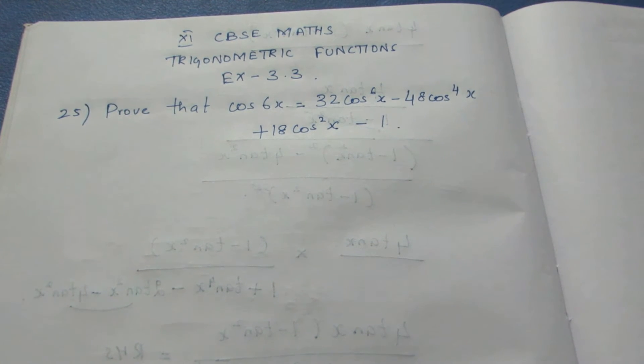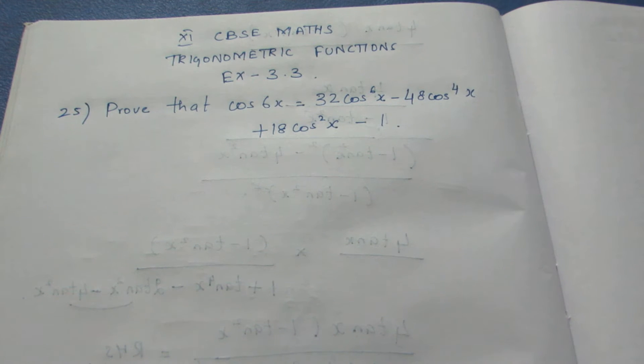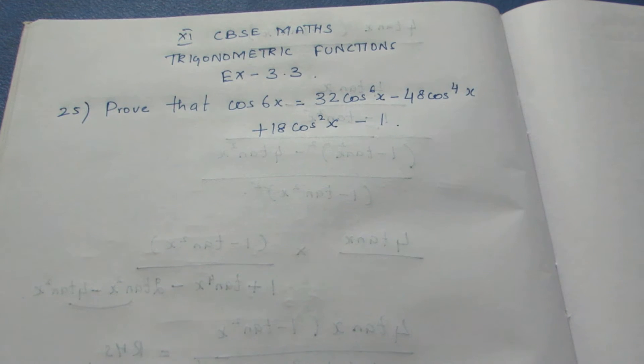Let's see the question: prove that cos 6x is equal to 32 cos⁶x minus 48 cos⁴x plus 18 cos²x minus 1.